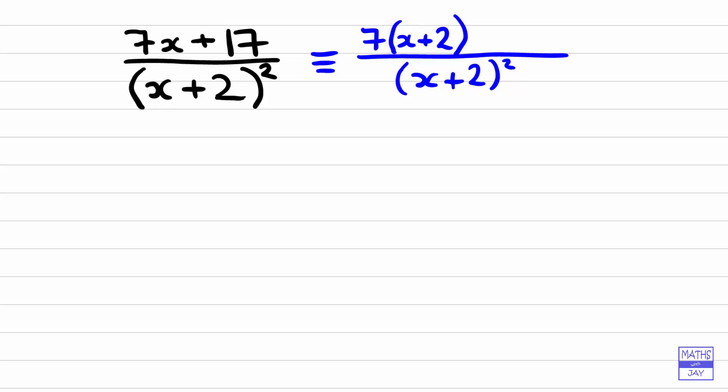So if we multiply 7 by x plus 2, we're going to get 7x, that's the important bit. But we now need to get the 17. So when we multiply 7 by 2 we only get 14. So we need to add on 3.